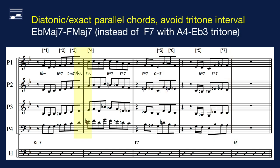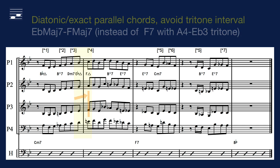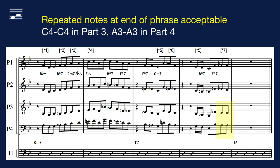Returning to the diatonic parallel chords in the ascending opening, we note the exact parallel F major 7 chord and hence the use of the E natural in part 4, in order to prevent the occurrence of the tritone interval A–Eb. This was also discussed in episode 7. And finally, we note the acceptable repeated notes from episode 9 at the end of the phrase in the lower parts.